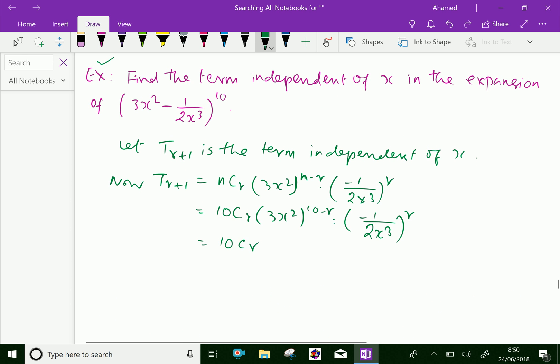Which equals 10Cr into 3^(10-r) and (-1/2)^r into x power 20, 20 minus 5r.